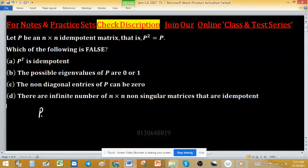It is given that P is a square matrix of size n by n and P square equals to P. This means that P is an idempotent matrix and we have to check which option is false.